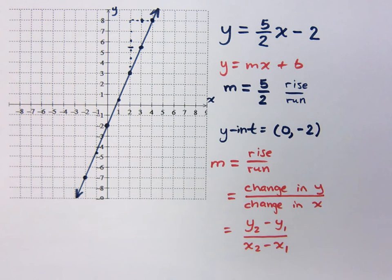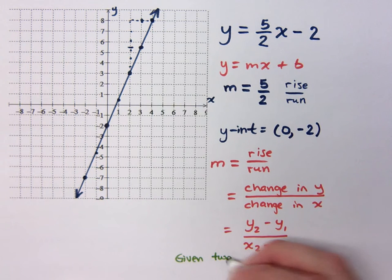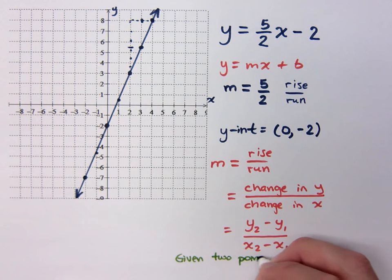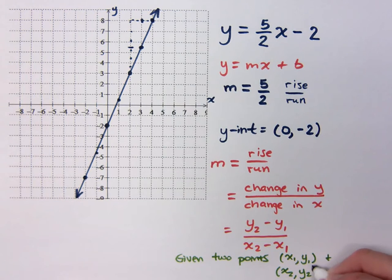Remember, change. To find the change from one thing to another thing, we use subtraction. And these are subscripts here. So if I've got two points, so this is when I am given two points, X1, Y1 and X2, Y2.